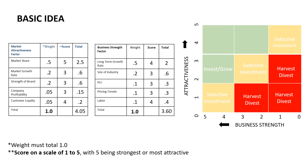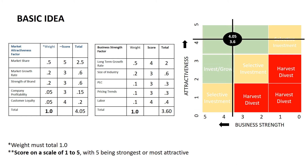How the scoring works is that a weight is given to each factor in both variables — attractiveness and business strength. The weighting cannot be more than one, and the scoring is done on a scale of one to five, with five being the strongest or most attractive. The weight is then multiplied by the score for a total on each row, and all of the factor totals are summed for a final total. The final score for the business in terms of attractiveness is 4.05, and for business strength it is 3.6. These numbers are then placed on the McKinsey grid, and in this case the business falls within the green, or invest and grow, area.